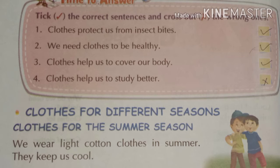Now turn the page and come to page number 124. Time to answer — tick the correct statement and cross the wrong one. The first one: clothes protect us from insect bites — it is the right statement, so we put a tick. Second: we need clothes to be healthy — this one is also right. If we wear clothes, we are not directly affected by heat or cold, so clothes help keep our body healthy.